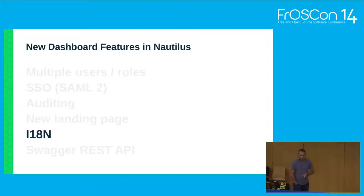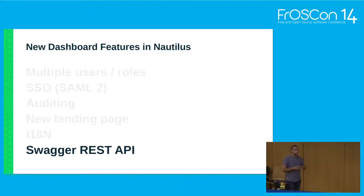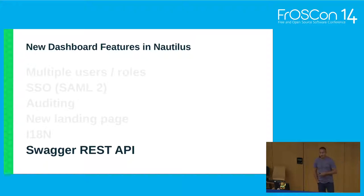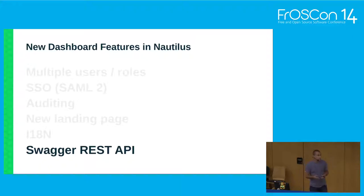The REST API in the backend received some love. We added an OpenAPI specification based on Swagger — you can use your web browser to browse all API endpoints. It's self-documenting: if you add comments to the REST API controllers in the Python backend code, they are rendered in the web view of the REST API. This makes it easier for developers to talk directly to the backend to perform tasks like creating a new pool or obtaining information. The intention is that at some point the dashboard's REST API becomes the de facto Ceph management API.